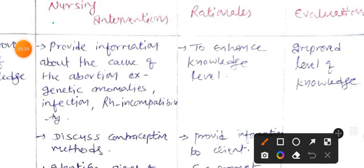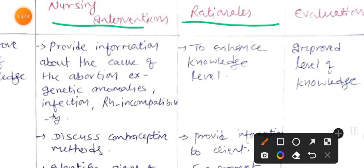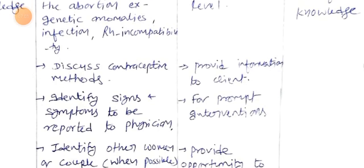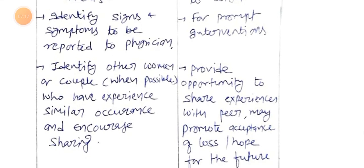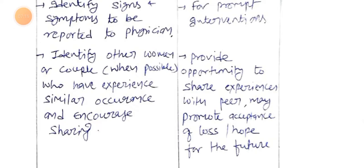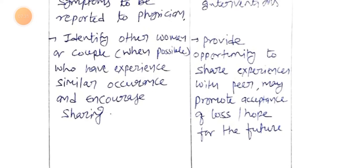The goal is to improve the level of knowledge. Nursing interventions include: provide information about the causes of abortion such as genetic anomaly, infection, and Rh incompatibility, to enhance the patient's knowledge level. Next, discuss contraceptive methods and provide information to the client. Identify symptoms to report to the physician for prompt intervention. Identify other women or couples who have experienced similar occurrences and increase sharing among peers to promote acceptance and coping.